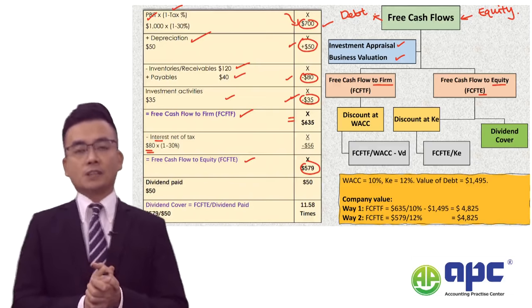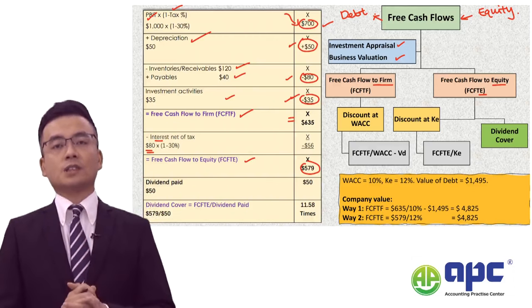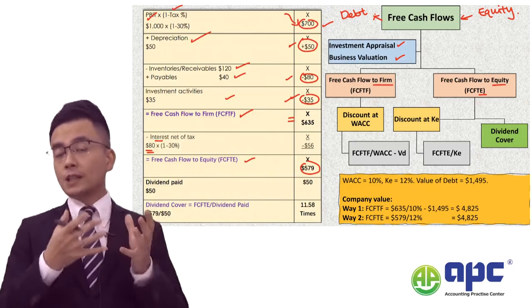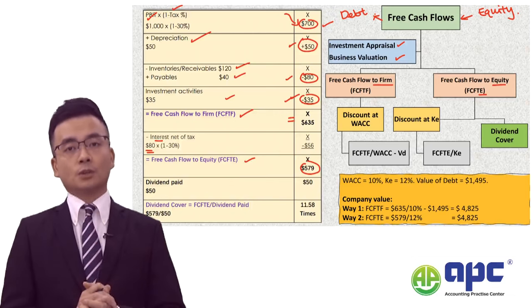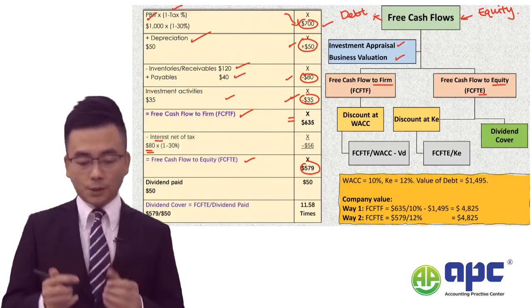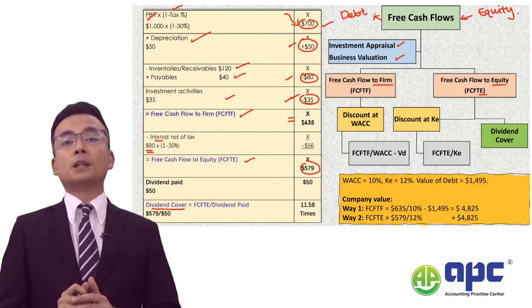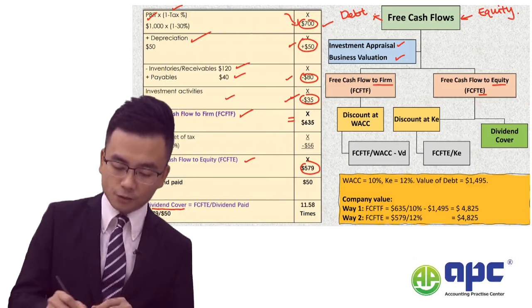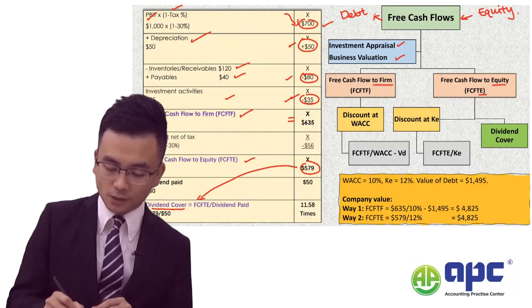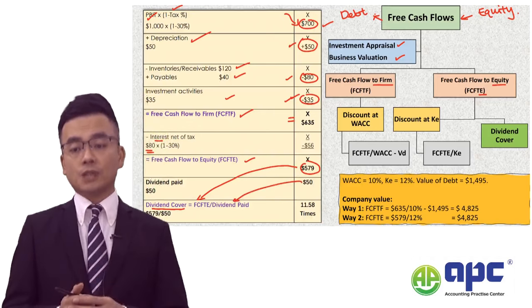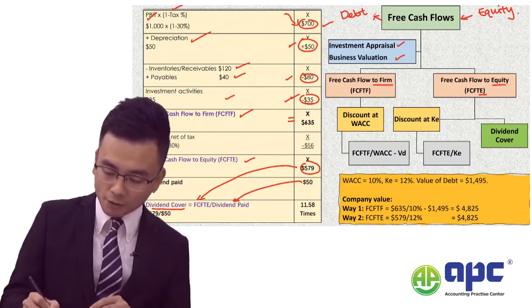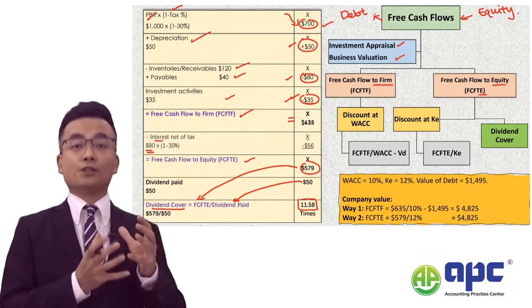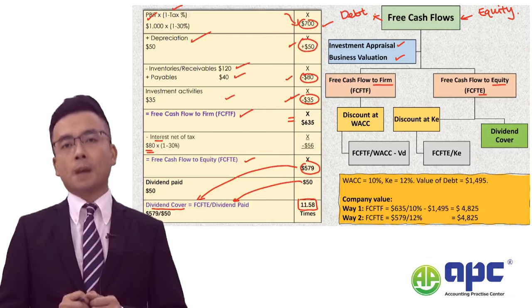Another examinable area is the company's ability to use free cash flows to pay dividends to shareholders. To compute dividend cover — the ability of the company to pay its dividend — we take the free cash flows to equity divided by the dividend paid. With FCFE of $579 and dividends of $50, we get dividend cover of 11.58 times.